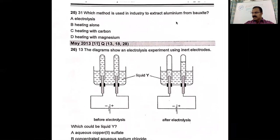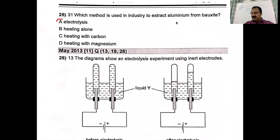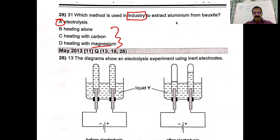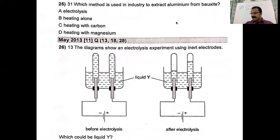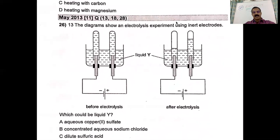Which method is used in industry to extract aluminum from bauxite? After studying the electrolysis chapter, the answer is electrolysis. Heating with magnesium could work since magnesium is more reactive than aluminum, but magnesium is very expensive, so industrially that method is not used. Industrially, electrolysis is used. Aluminum is a very reactive metal, so it can only be extracted by electrolysis.